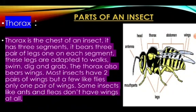Parts of an insect — thorax. The thorax is the chest of an insect. It has three segments and bears three pairs of legs, one on each segment. These legs are adapted to walk, swim, dig, and grab. The thorax also bears wings, and most insects only have two pairs of wings, while others like flies only have one pair. Some insects like ants and fleas don't have wings at all.